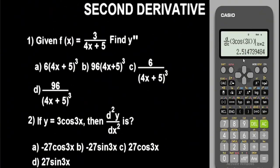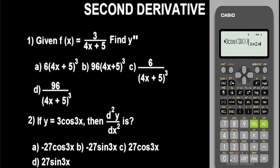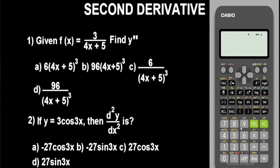We get the output value. Store this as alphabet A — press shift, then STO, then press the A button. The value has been stored as A. Go back using the up arrow key, and add the constant plus 0.00001 to the input. Press equals to get the new value, then store this as B — press shift, then STO, then the B button.